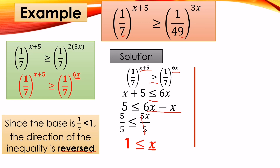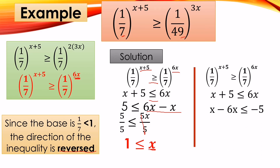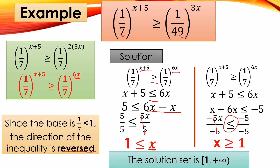For the other method: move 6x to get x − 6x ≤ negative 5, so −5x ≤ −5. Divide both sides by −5 (a negative number), so the symbol changes — from less than or equal to, it becomes greater than or equal to. So x ≥ 1. Both methods give the same answer: x ≥ 1.